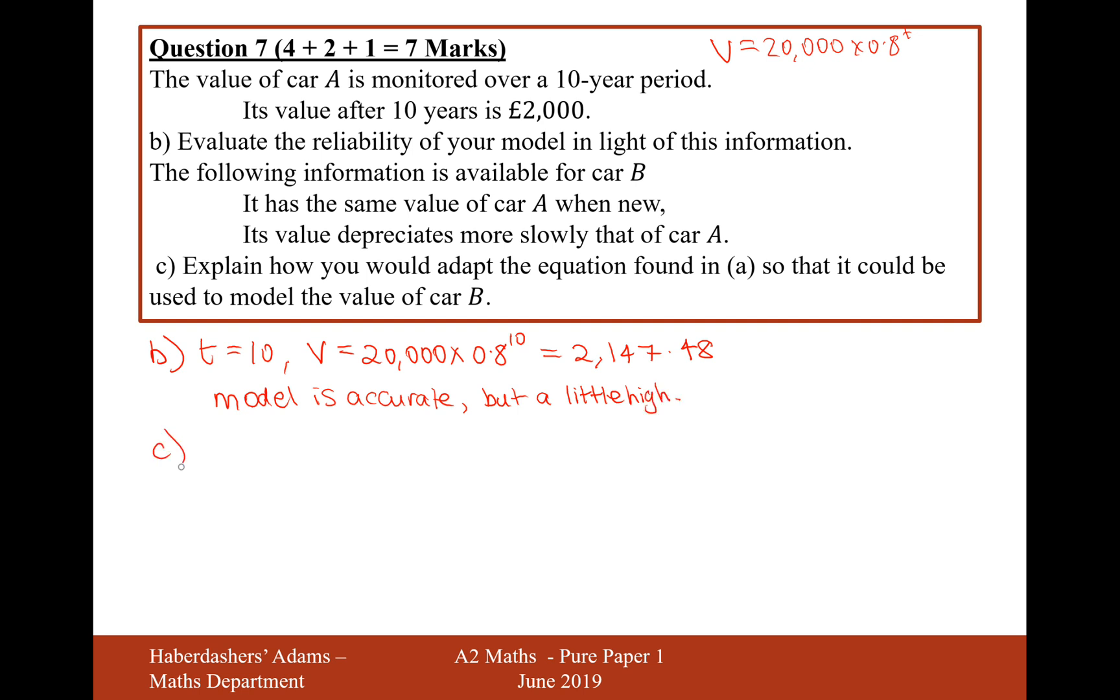Moving on to part C. The following information is available for car B: it has the same value as car A when new, its value depreciates more slowly than that of car A. Explain how you would adapt your model you found in A so that it could be used for the model of the value of car B.